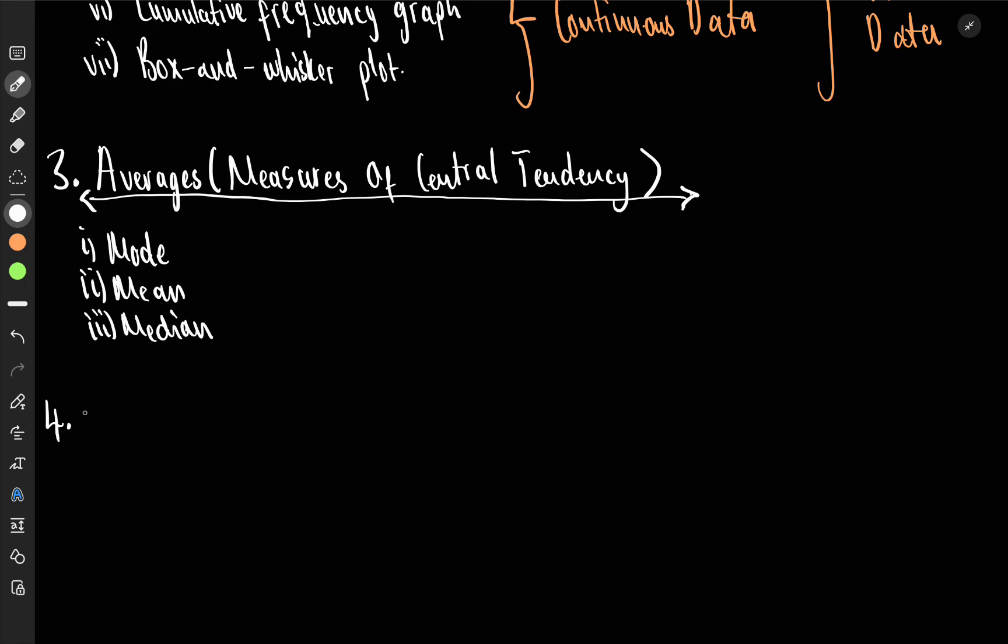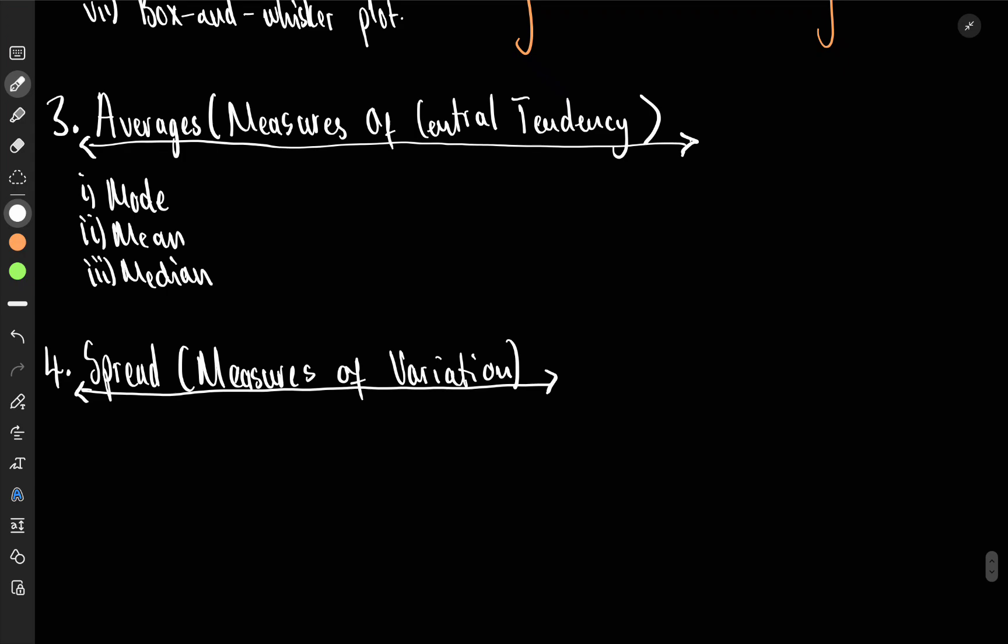Now, the next one is going to be, or we can call it the spread, or sometimes called measures of variation. Now, we want to see how our data varies. Because sometimes knowing the average alone is not enough. Because you could have two types of data having the same average.